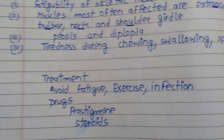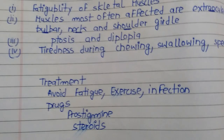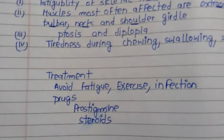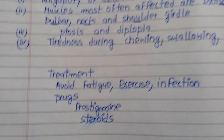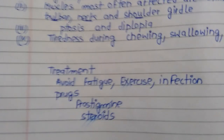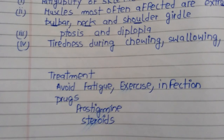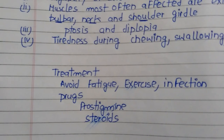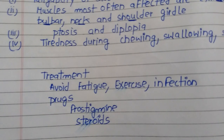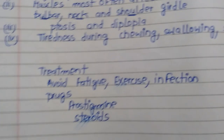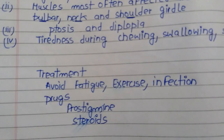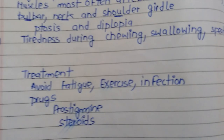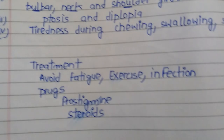90% of cases में acetylcholine receptor antibody present होती है। Anti-skeletal muscle antibody भी present होगी, जो thymoma को indicate करती है। Repetitive nerve stimulation EMG at 2-3 Hz करवा सकते हो। Chest X-ray हमेशा mediastinal mass show करेगा, जो एक important indicator है।